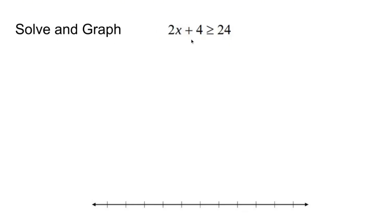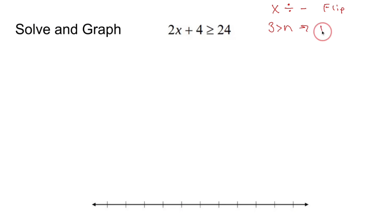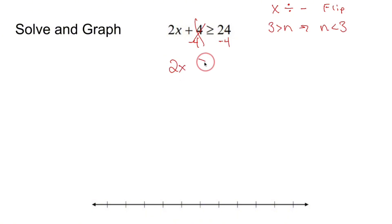Solve and graph this inequality. When solving an inequality, remember: if you multiply or divide by a negative, flip the symbol; if your variable is on the right side, flip everything. We're going to solve this like a regular equation. I have 2 times (x + 4). I have to get rid of the 4 first — subtract 4 from both sides. Cross out, drop down 2x, drop down greater than or equal to, drop down 20. Now I divide both sides by positive 2, which means don't flip the sign. So x is greater than or equal to 10.